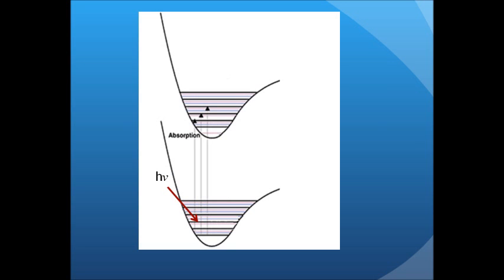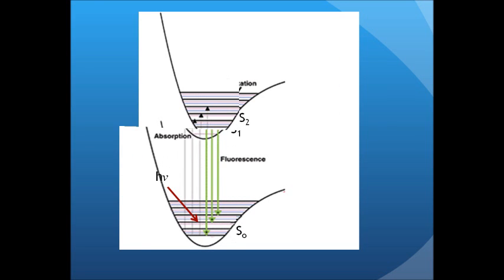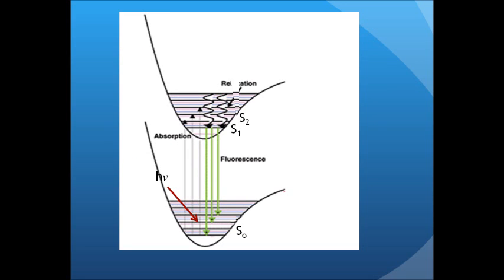Phosphorescence is another type of radiative transition involving the emission of photons during relaxation. Unlike fluorescence, phosphorescence is referred to as the transition of electronic states with different spin multiplicities. Electron moves from excited singlet state to an excited triplet state.